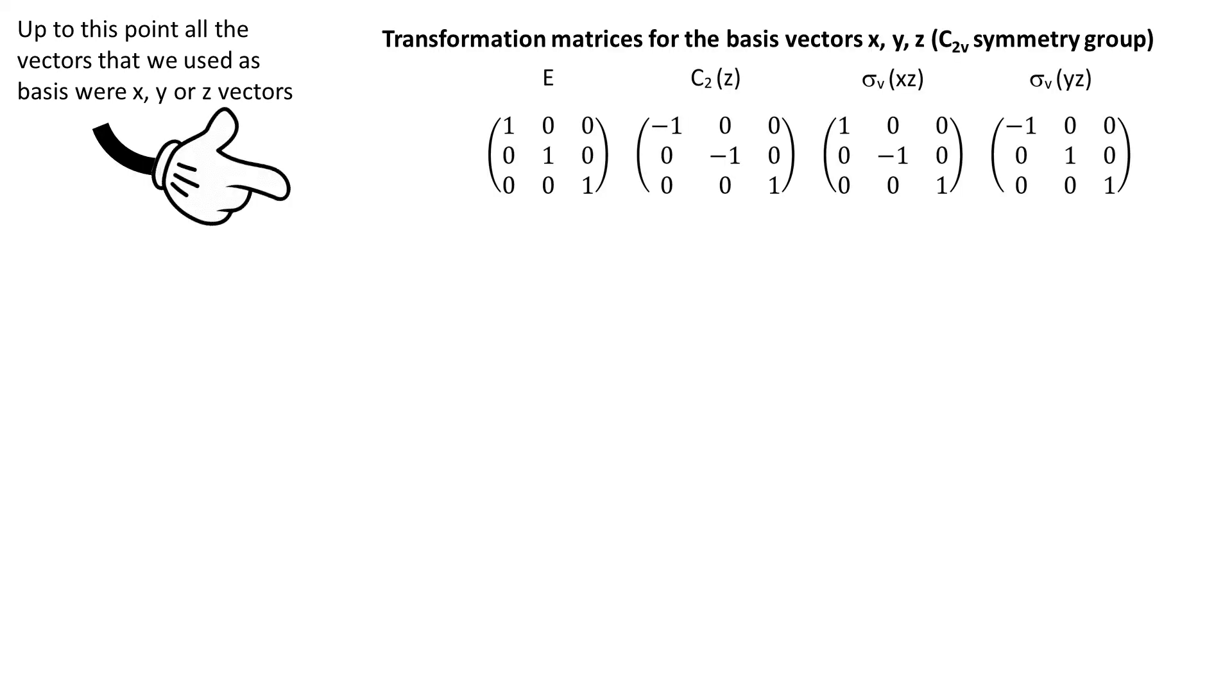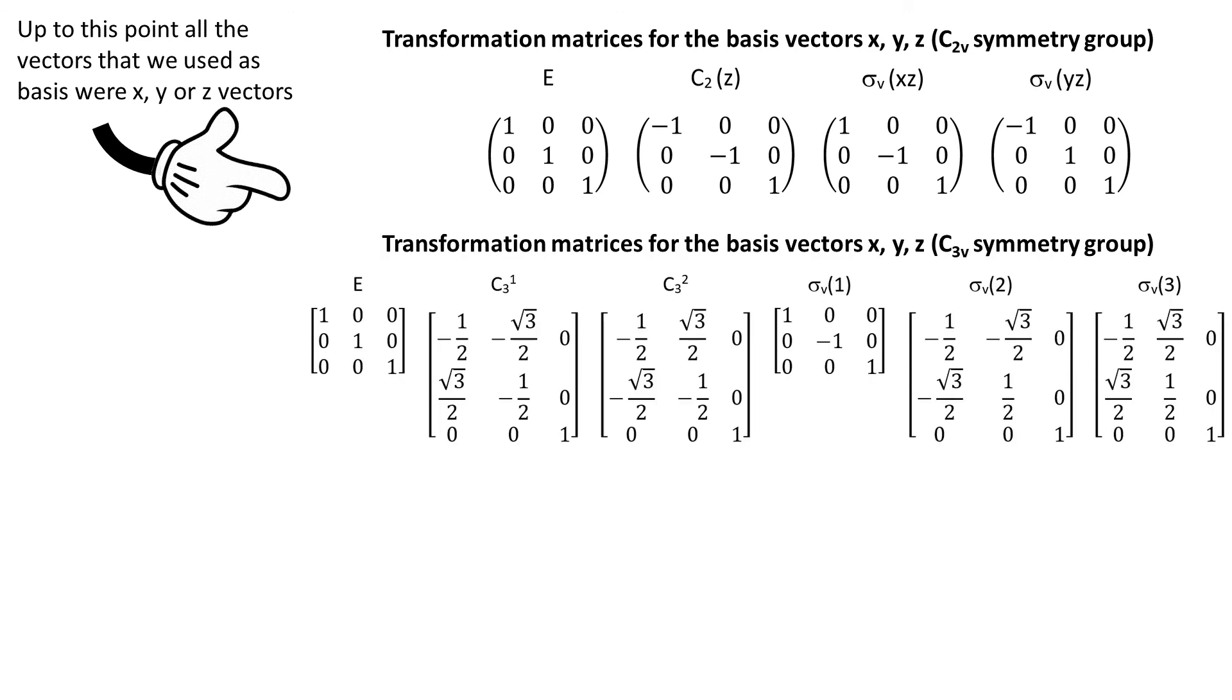For instance, if we take vectors x, y and z and perform symmetry operations for C2V, then we will find the set of 3x3 matrices will be made of three 1x1 blocks. For C3V symmetry, for instance, the set of 3x3 matrices will be divided into 2x2 block and 1x1 block.